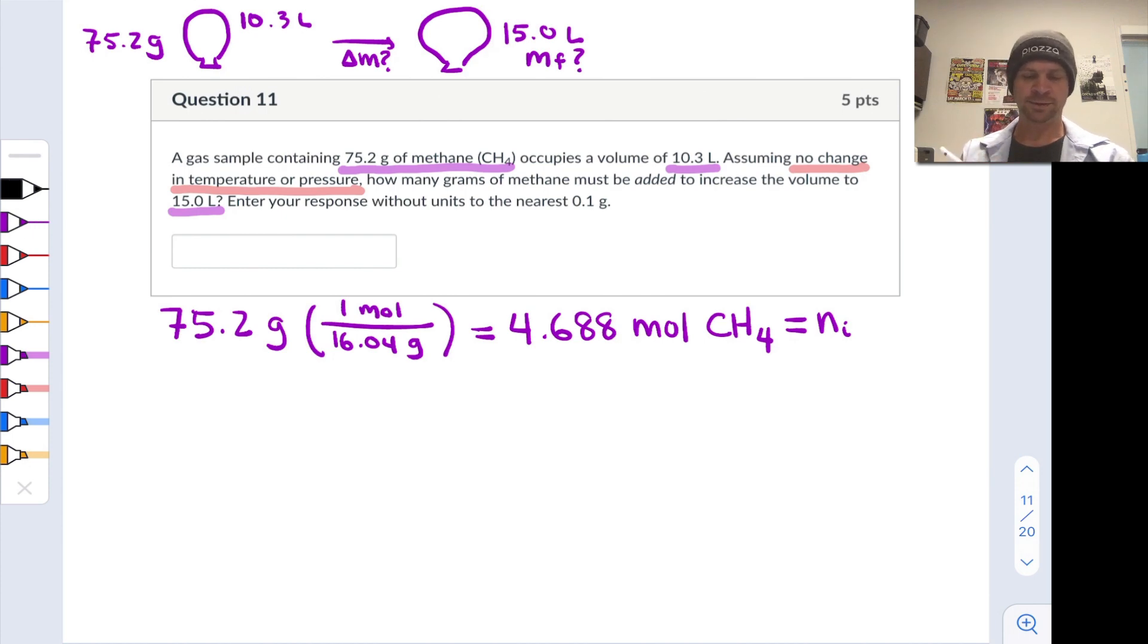What is n final? Let's consider the relationship between volume and number of moles for a gas - Avogadro's law. Avogadro's law says the ratio of volume to number of moles for a gas is constant. So the initial volume divided by the initial number of moles equals the final volume divided by the final number of moles.